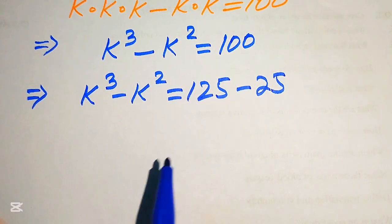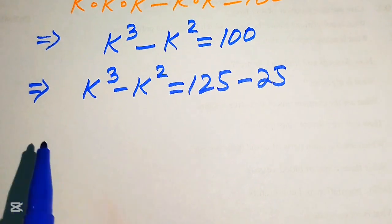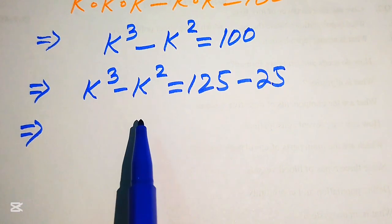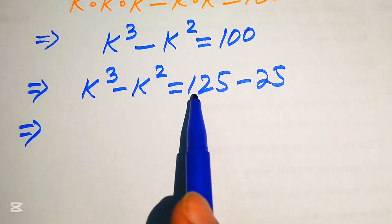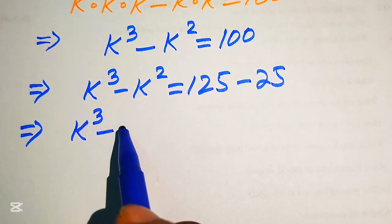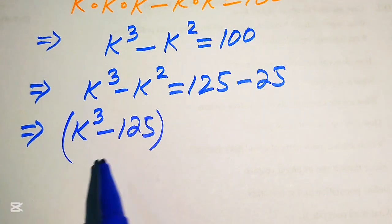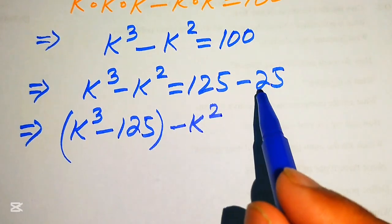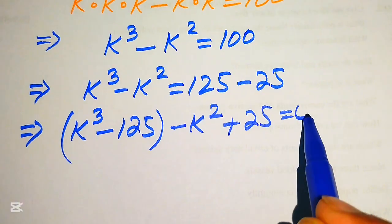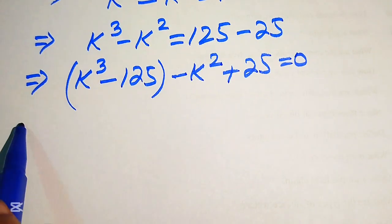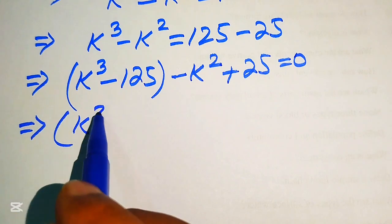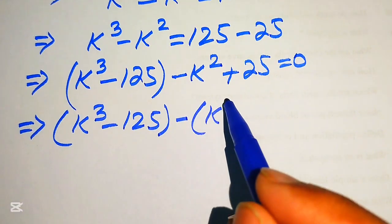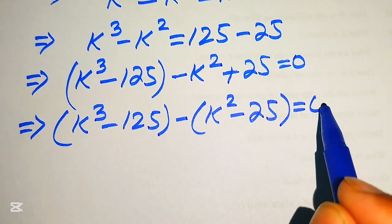When you subtract these two values we get 100. Now we move terms from the right-hand side to the left-hand side, pairing k cubed with 125 to get k cubed minus 125, and minus k squared becomes plus 25, giving us (k³ - 125) - (k² - 25) = 0.